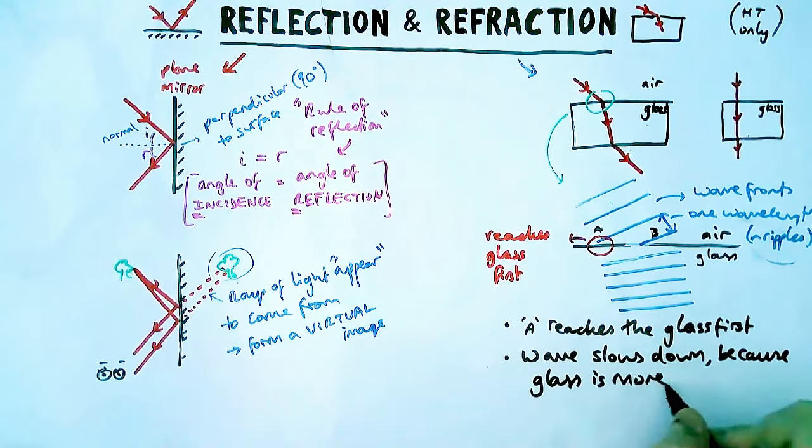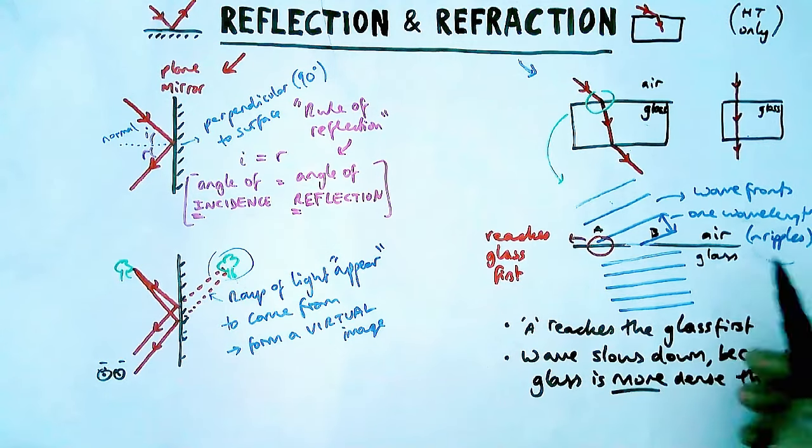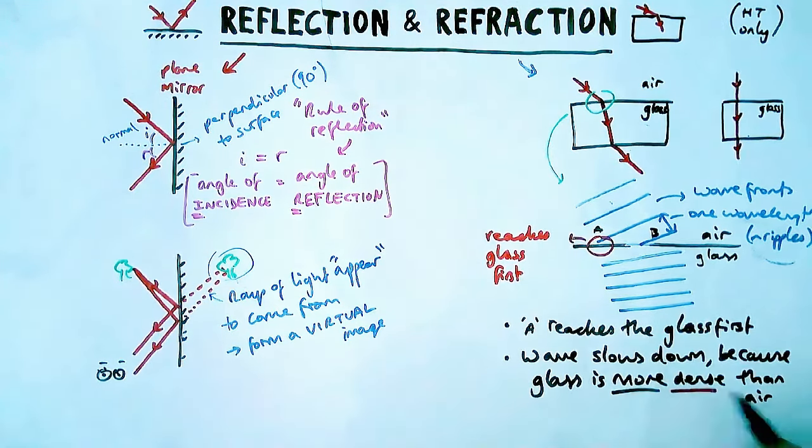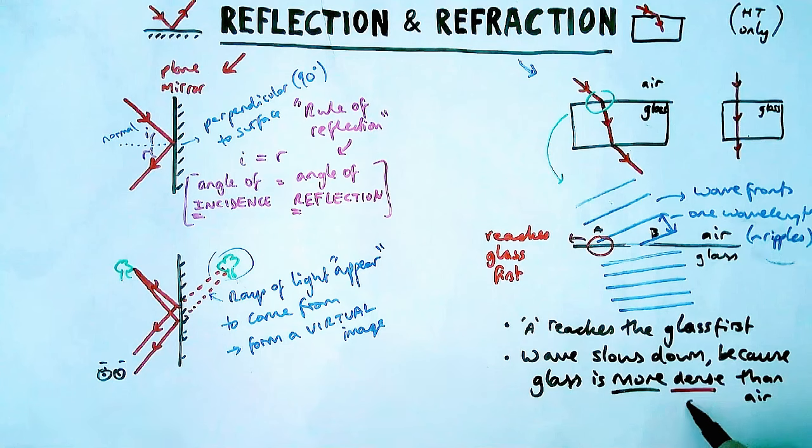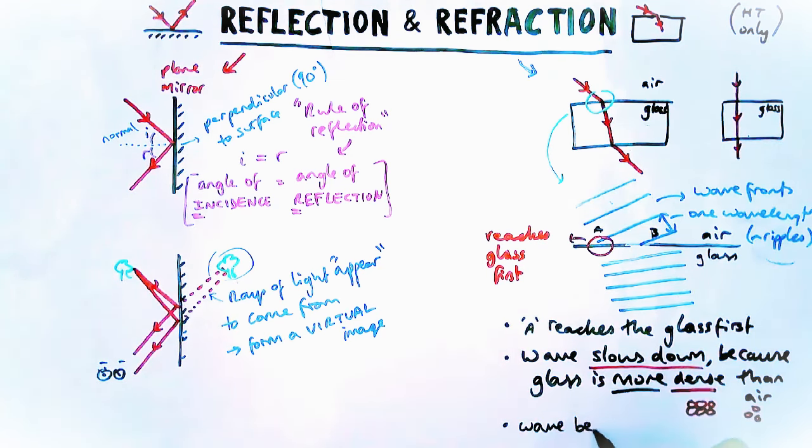Density—mass over volume—essentially how much matter there is in a certain volume. Glass is a solid so the particles are very compactly packed in together in neat rows, whereas in air, we know air is relatively not that dense because it is a gas.